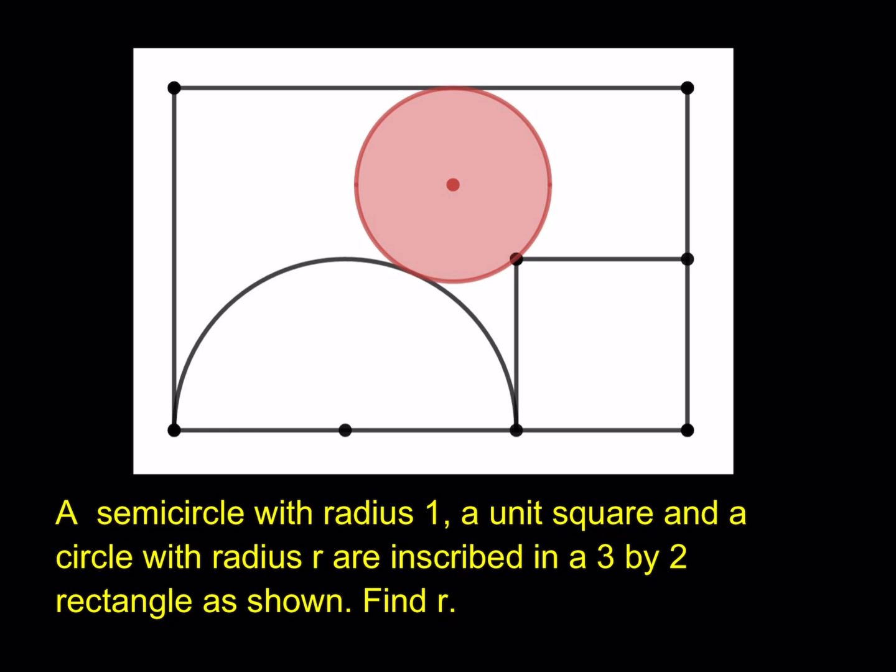A semicircle with radius 1, a unit square, and a circle with radius r are inscribed in a 3 by 2 rectangle as shown. Find r, which is the radius of the circle. Let's get started. Now, as you know, pretty much with all the puzzles that we have on this channel, we start by making some connections. So let me go ahead and connect these two centers right here. And then I'm going to drop a perpendicular that passes through the center of the circle so that I can use the Pythagorean theorem. We get some right triangles here.